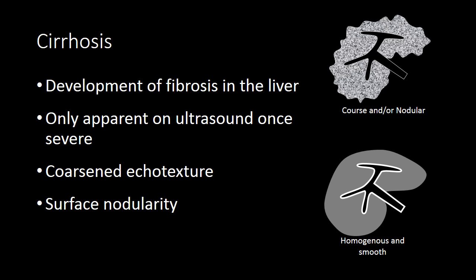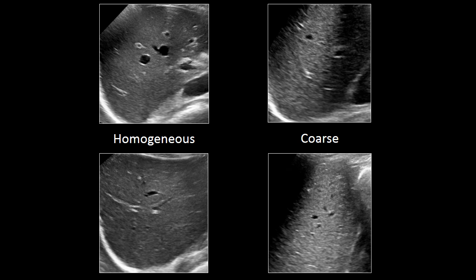The other finding we're looking for is surface nodularity. The normal liver should have a nice, smooth surface, and in the setting of cirrhosis, the liver surface will become irregular or nodular. Here are examples from four different patients. On the left-hand side, we have two normal livers in which the liver parenchyma is very homogenous. The only areas where there is texture are where the vessels are, and those vessels provide normal texture. But the actual tissue of the liver is very smooth and homogenous.